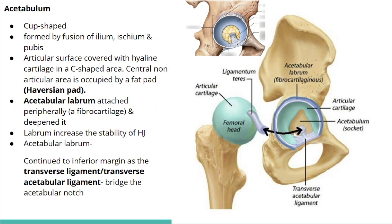Instead, the central part is covered by a fat pad called the Haversian pad. The acetabular labrum attaches peripherally — it is fibrocartilage that deepens the acetabulum and increases the stability of the hip joint. Inferiorly, the acetabular labrum continues as the transverse acetabular ligament, which bridges the acetabular notch.